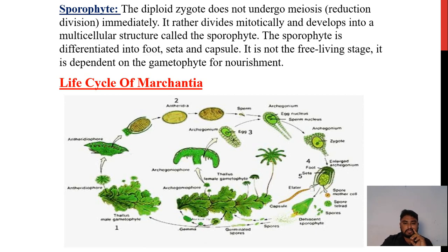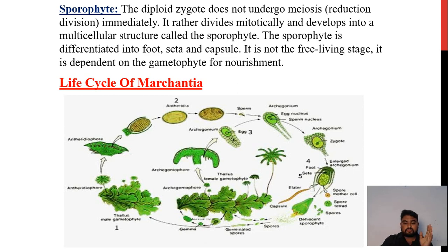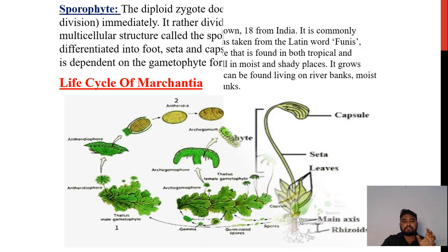This is the picture showing the life cycle. Antheridophores produce antheridia and sperm; archegoniophores produce archegonia. Both undergo fertilization to form the zygote. The gemma form the thallus, which develops into male antheridophores. This is the life cycle of Marchantia.